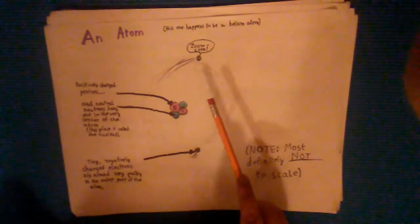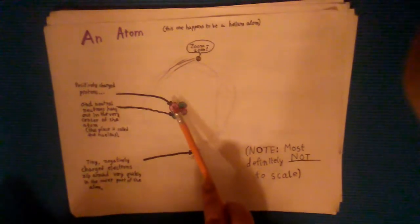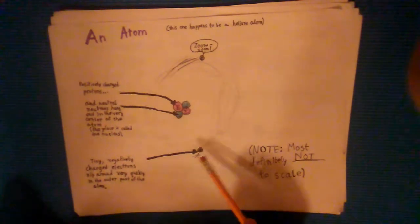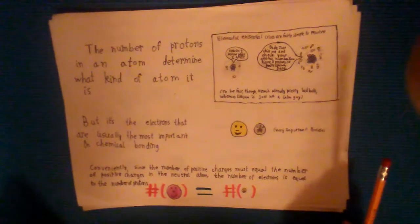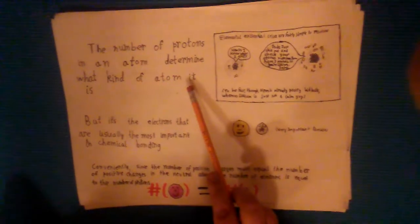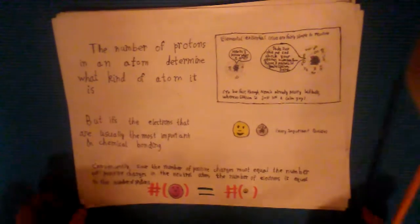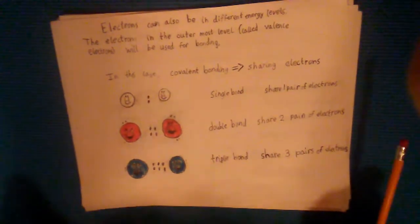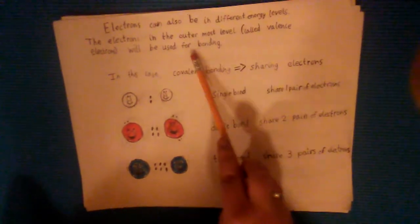First we need to look back at the structure of an atom. It has the protons and neutrons in the middle and it has tiny negatively charged electrons flying around the outside. While the number of protons determines what kind of atom you have, the electrons are going to be the most important in chemical bonding. Specifically the electrons that are farthest away from the nucleus are going to be the most important.